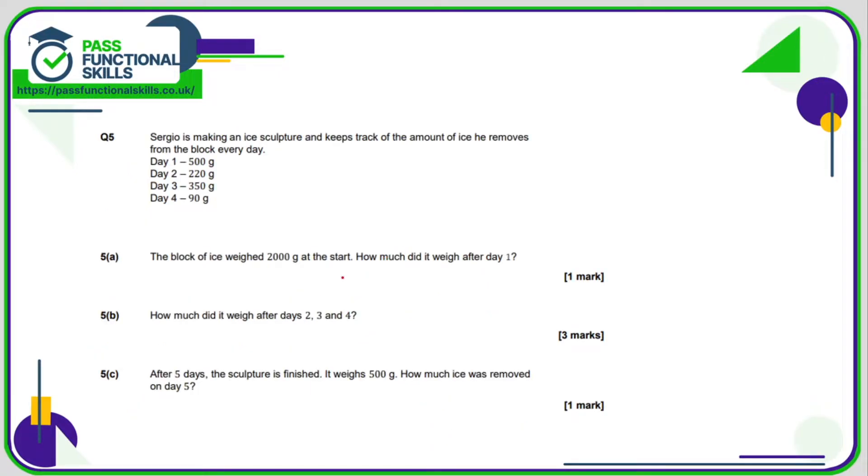Question number five. Again, we can use the calculator here. So after day one, he's removed 500 grams. So 2000 grams minus 500 is 1500 grams. And then day two is 1500 take away 220, which again, using the calculator is nice and easy. So after day two, it's 1280. After day three, it's going to be 1280 take away 350, which is 930. And on day four, it's going to be 930 minus 90, which is 840 grams. And on day five, it weighs 500 grams. So if it was 840 the day before, and now it's 500, the difference between these is 840 take away 500, meaning that 340 grams of ice was removed.